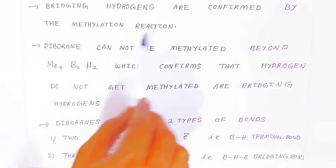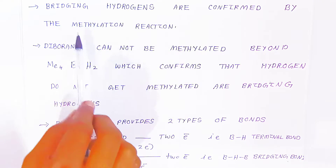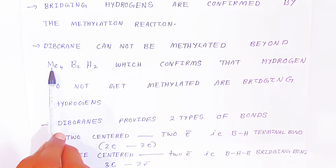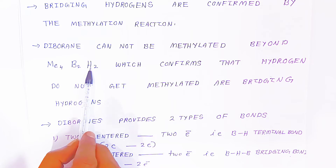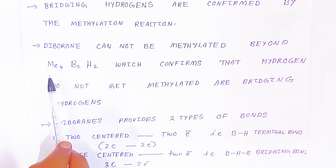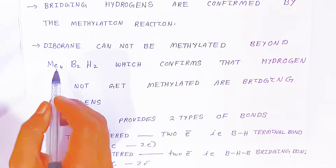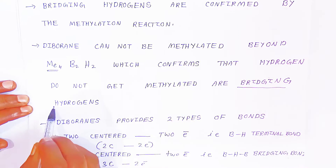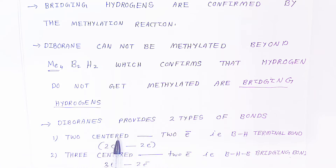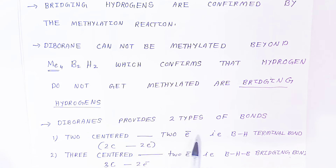Bridging hydrogens are confirmed by the methylation reaction. Diborane cannot be methylated beyond tetramethyl B₂H₂, which confirms that the hydrogens that do not get methylated are bridging hydrogens. Only the four terminal B–H bonds undergo methylation, giving tetramethyl diborane. Therefore, diborane provides two types of bonds: two-centered two-electron (2c-2e) terminal B–H bonds, and three-centered two-electron (3c-2e) B–H–B bridging bonds.